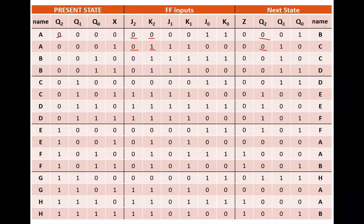Finally, we reach the last state name column. State code 001 has been named B on the left side, so I call it B on the right side. State code 010 has been named C on the left side, so I call it C on the right side. And so on for all remaining rows.